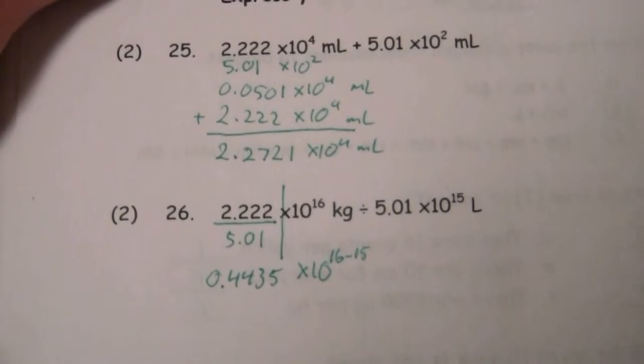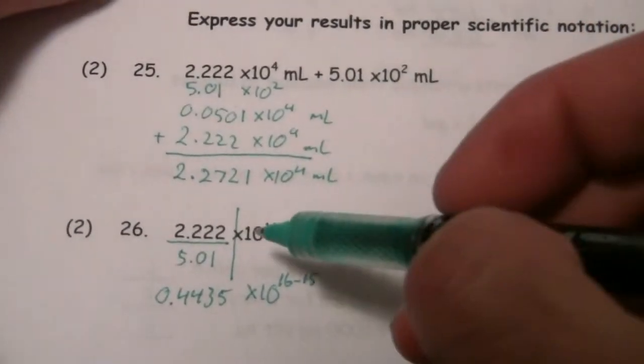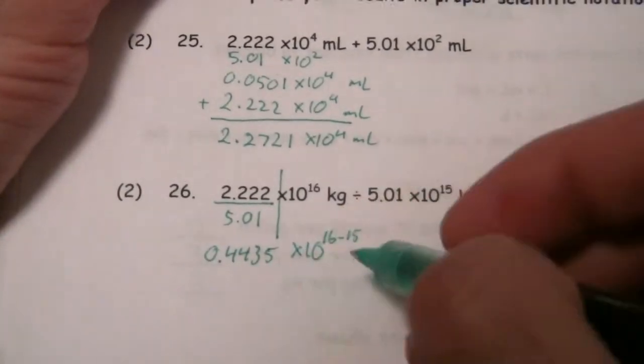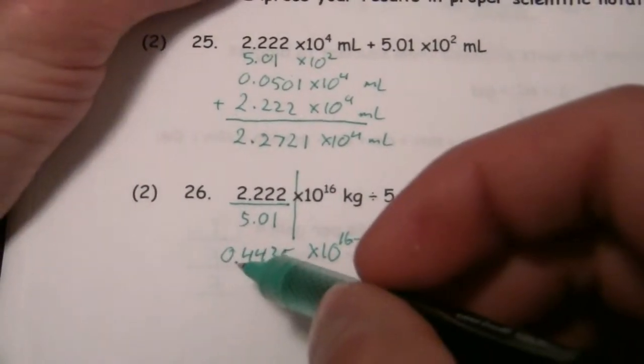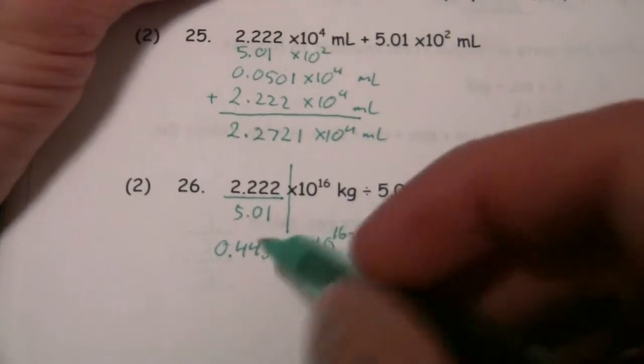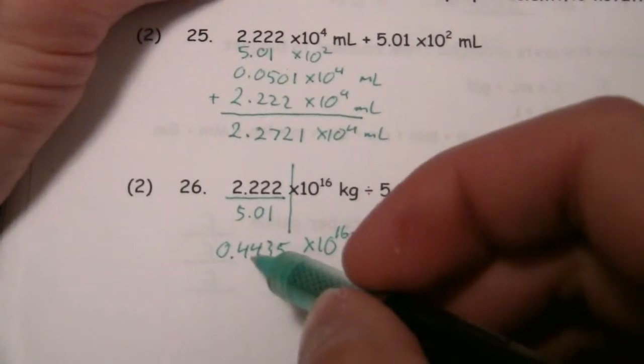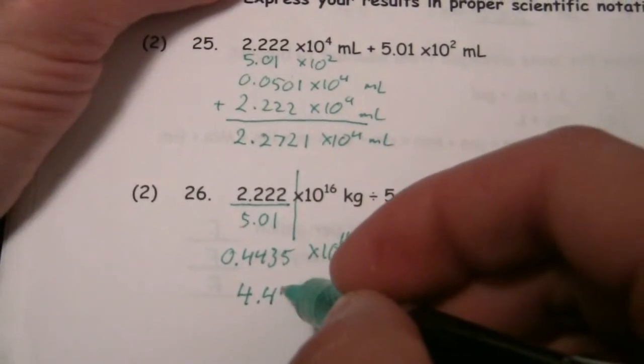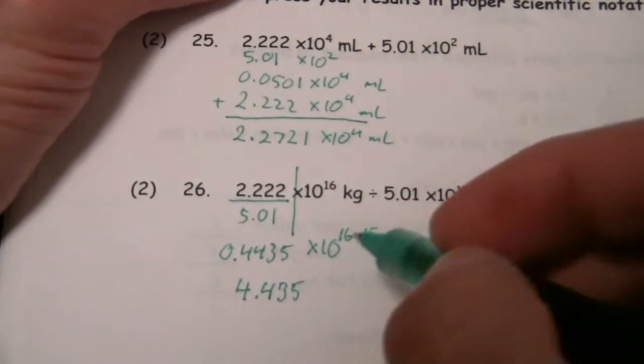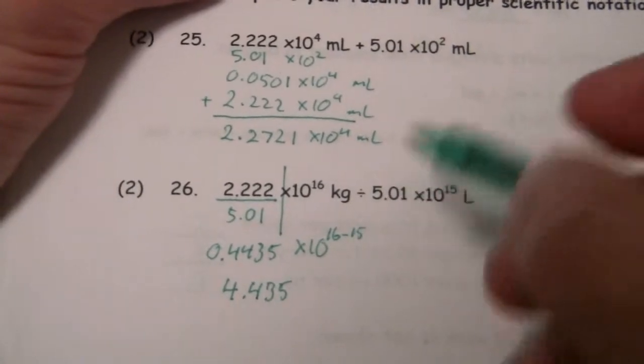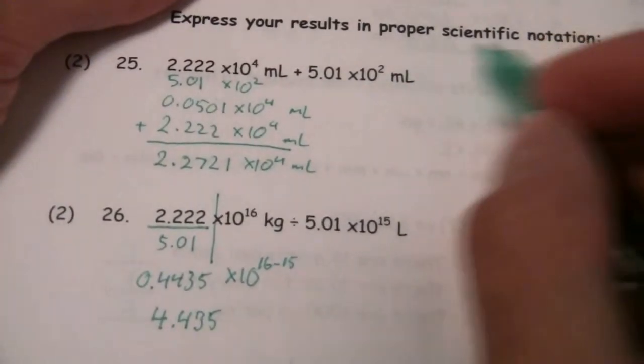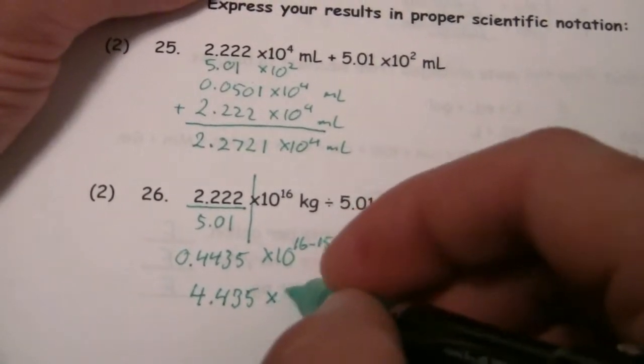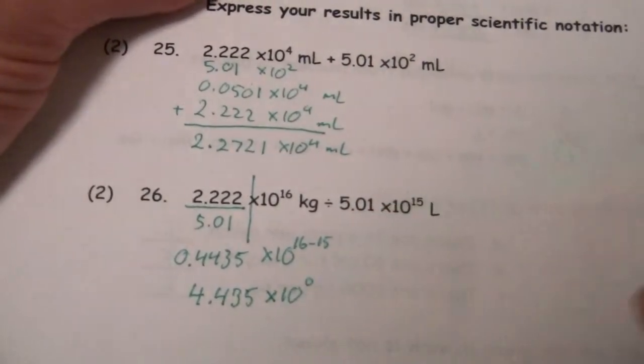So it was 0.4435, and then we said this is times 10 to the 1 is what that amounts to. And we want to put this one in proper scientific notation. So we're going to go ahead and put in that times 10 to the 1. And so it's just going to be 4.435. And since we are asking for proper scientific notation, I mean, this is the right answer. But we're going to say times 10 to the 0,